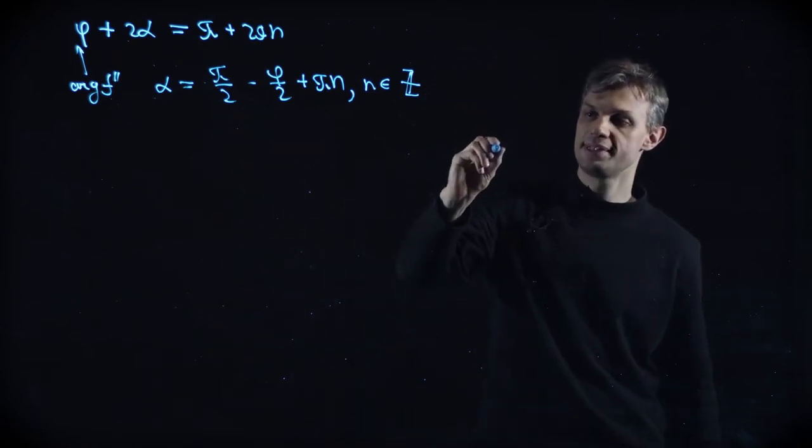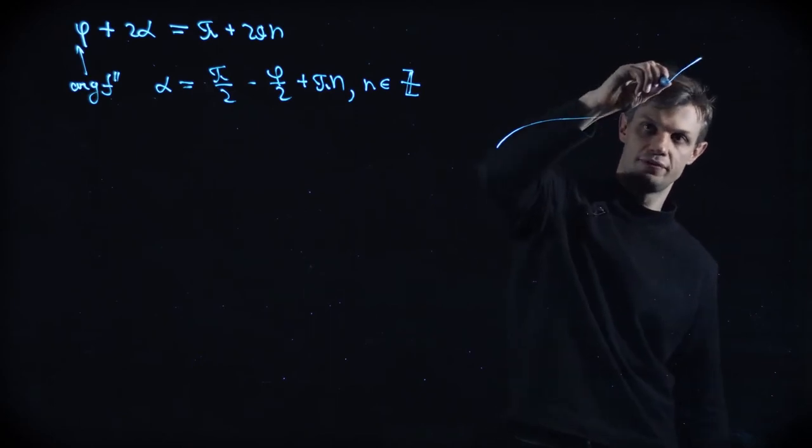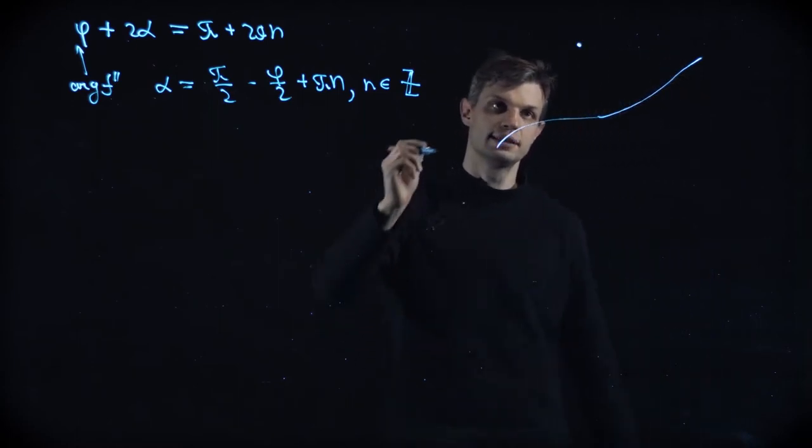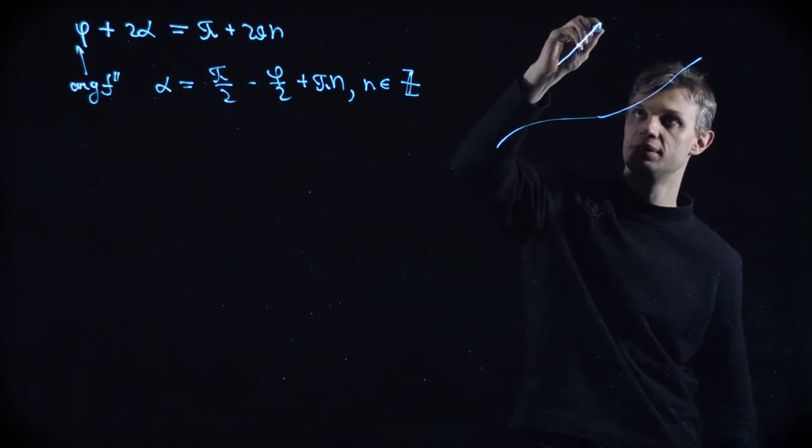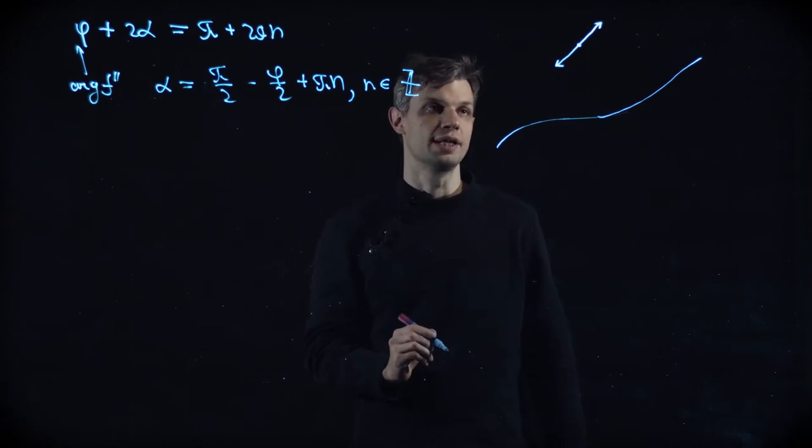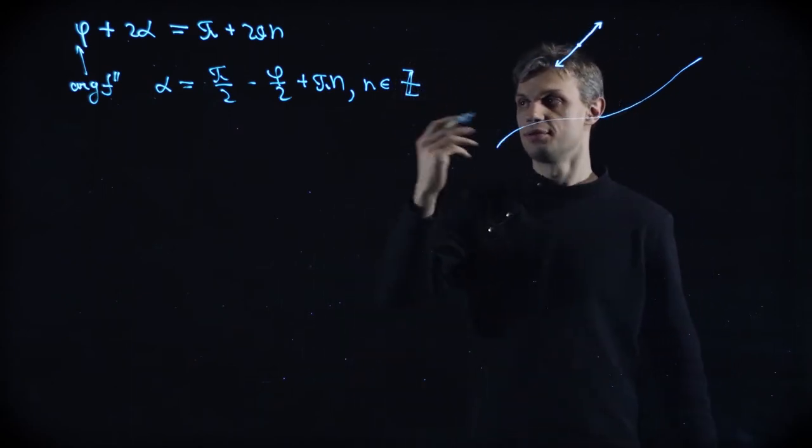So what is happening? So this is the initial position of our contour. This is the saddle. And these are two possible steepest descent directions, right? Because we can go down from the saddle in this direction or in this direction. So it's quite natural.